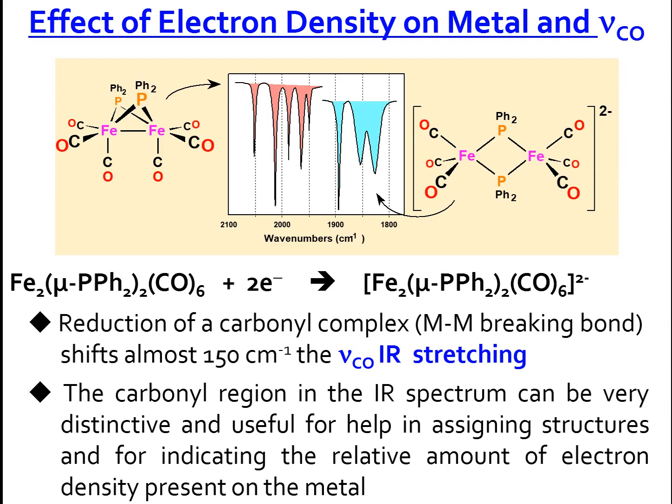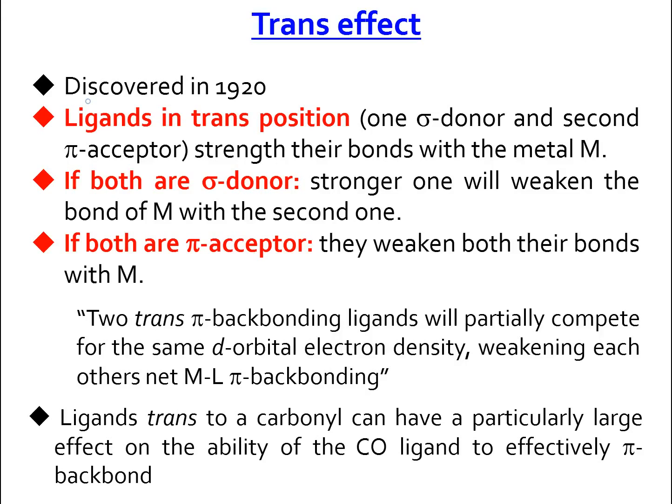One of the most important effects in the geometry of organometallic complexes is the trans effect, discovered in 1920. The idea is to compare the donation power and the acceptance power of two ligands which are in trans position with respect to the metal M. If the ligands in the trans position are: one is a sigma donor and the second is a π acceptor, this effect will strengthen the bonds between these ligands and the metal.